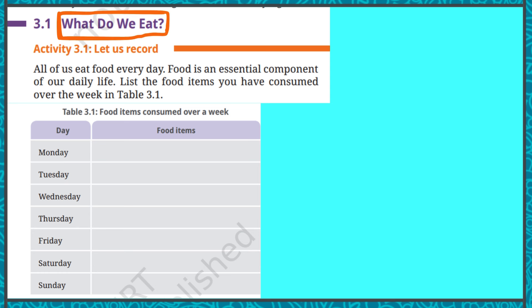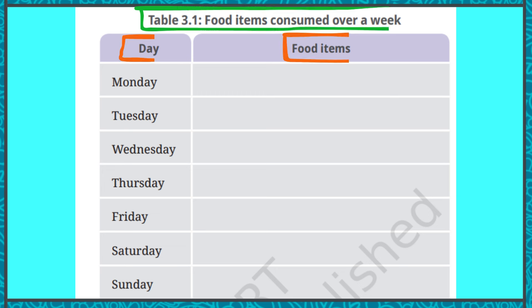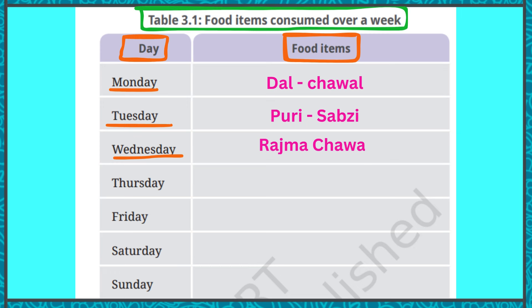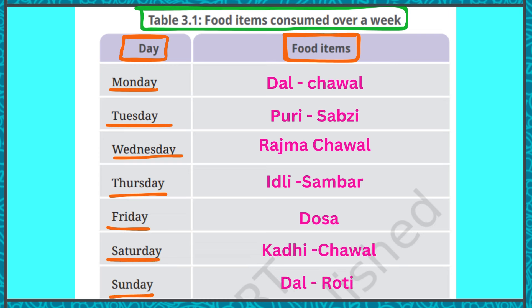What do we eat? All of us eat food every day — food is an essential component of our daily life. List the food items you have consumed over the week in Table 3.1. For example: Monday — dal chawal, Tuesday — puri sabzi, Wednesday — rajma chawal, Thursday — idli sambar, Friday — dosa, Saturday — kadi chawal, Sunday — dal roti. Whatever you recall, write it in the table.